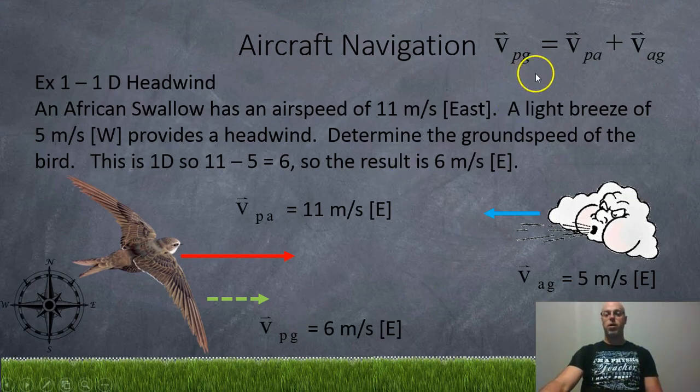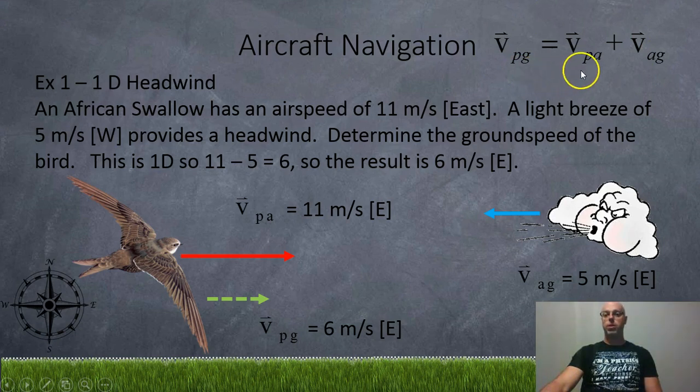So the formula for calculating the overall velocity is we're just going to use this vector formula right here. The velocity of the plane with respect to the ground equals the velocity of the plane relative to the air plus the velocity of the air compared to the ground. So you can say with respect to, relative to, or compared to.